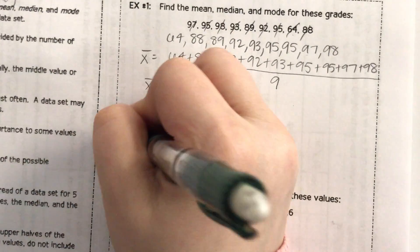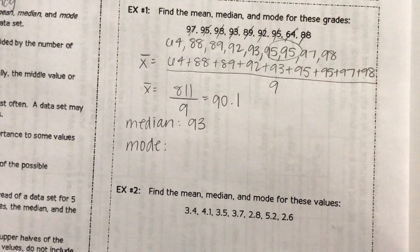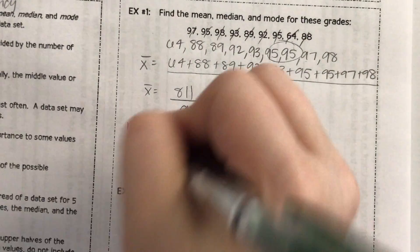Okay, our mode - which one occurs the most often? 95 occurs twice, everything else occurs once, so our mode is 95.